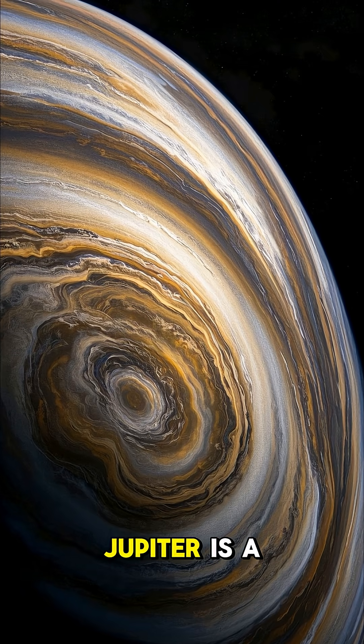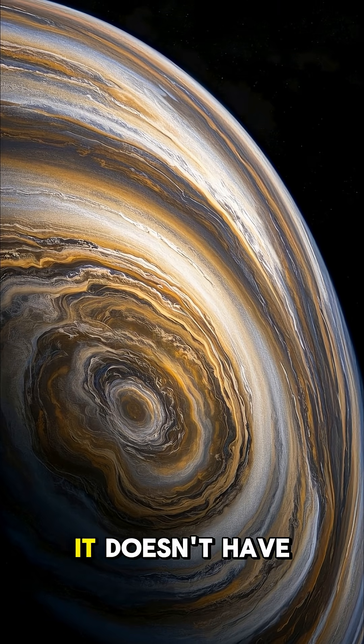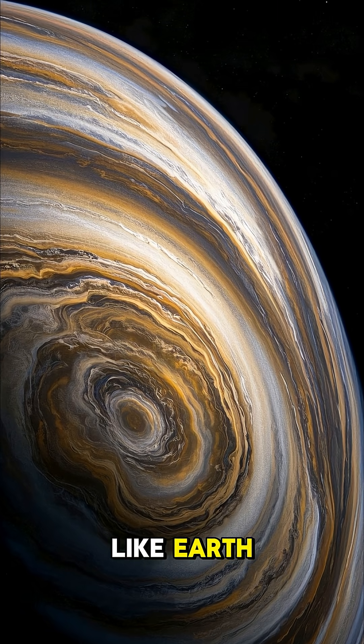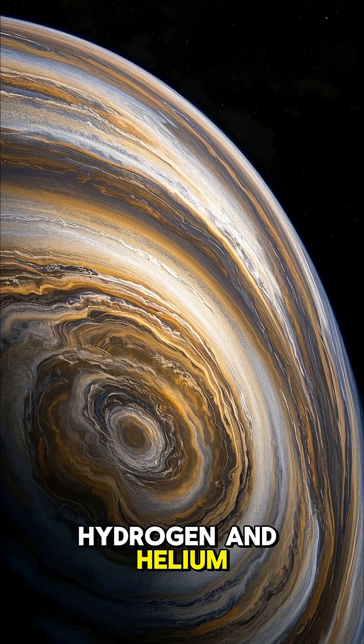Number four, Jupiter is a gas giant. It doesn't have a solid surface like Earth, but it's made up of mostly hydrogen and helium.